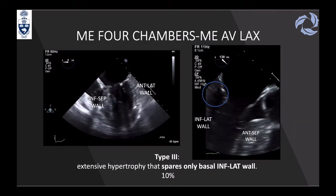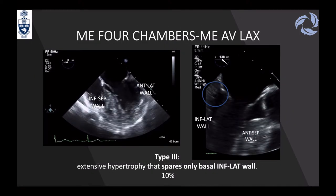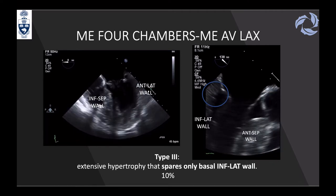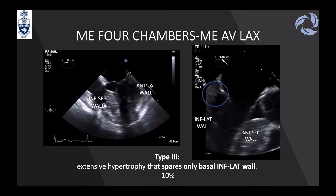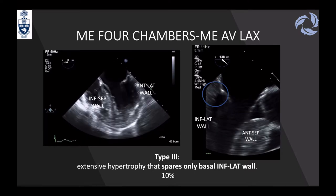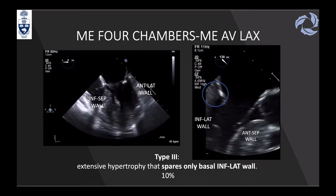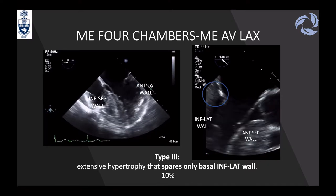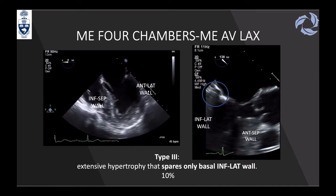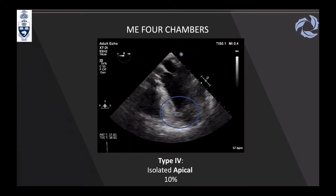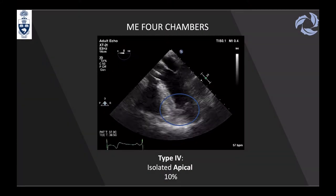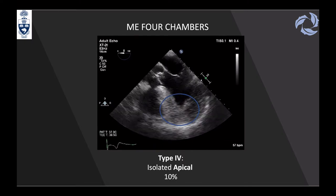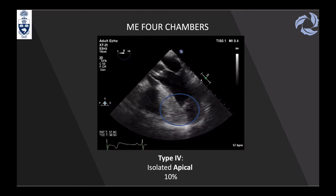Type three is extensive hypertrophy throughout the heart, with only the inferolateral wall spared, visible in the aortic valve long axis view. Type four, also 10%, is isolated apical hypertrophy, which can be missed without contrast, just as with apical aneurysms.